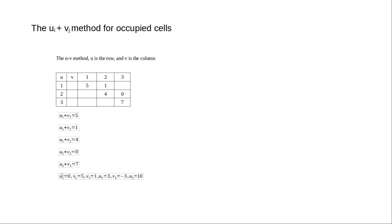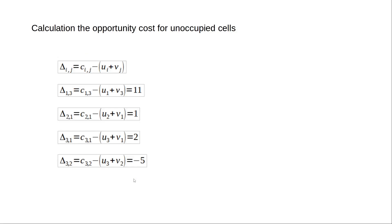We arbitrarily assume u1 = 0. Mind you, it is not necessary to set u1 to zero — you can take any variable as zero and start solving. With u1 = 0, we get: v1 = 5, v2 = 1, u2 = 3, v3 = −3, and u3 = 10. Now we find the opportunity cost for the unoccupied cells.